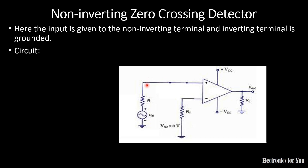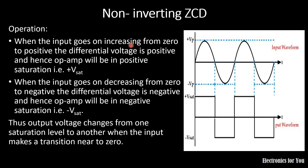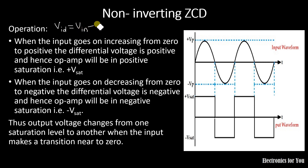Here is the diagram for the non-inverting ZCD. The input is applied to the non-inverting terminal, indicated by the plus sign. The inverting terminal is grounded, so the reference voltage is zero volts. The operation depends on the formula: VID equals voltage at the non-inverting terminal, which is VIN. Since the reference voltage at the inverting terminal is zero, VID equals VIN.